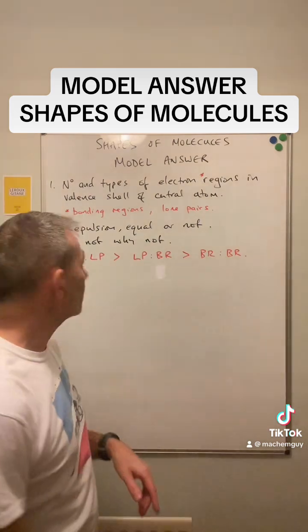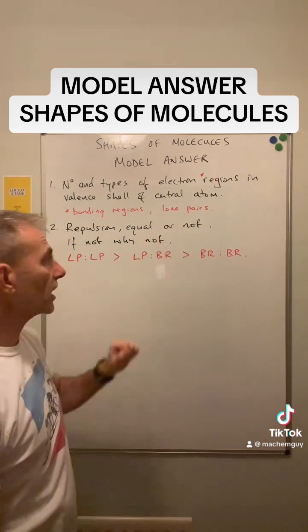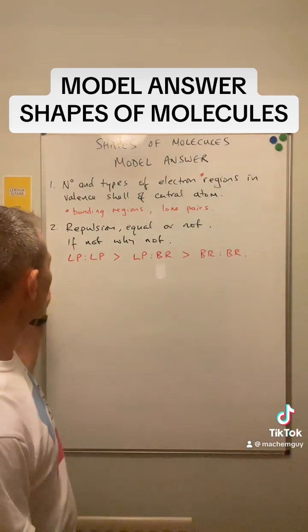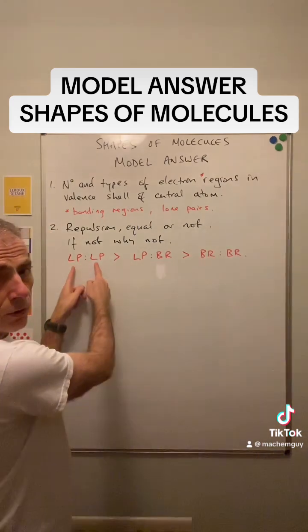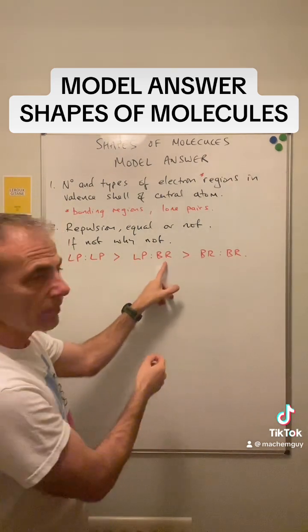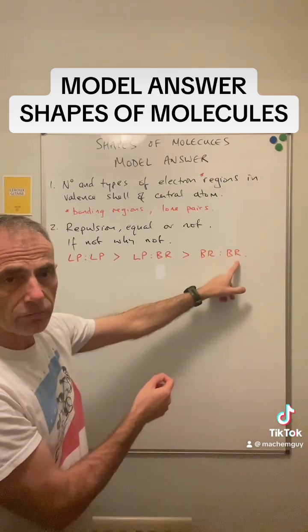Second thing you've got to talk about is repulsion. So you've got to talk about repulsion: is it equal or is it not equal? And if it's not equal, why not? So there's the repulsion order. If you've got two lone pairs repelling each other, they have the greatest repulsion, followed by lone pair to bonding region, followed by bonding region to bonding region.